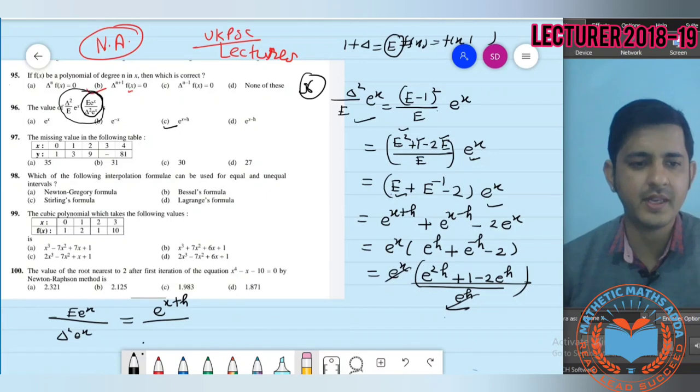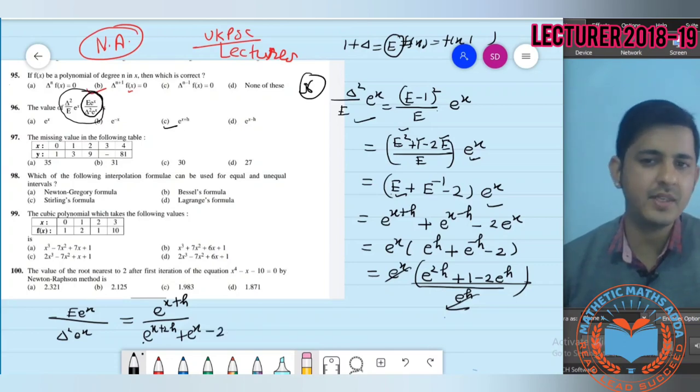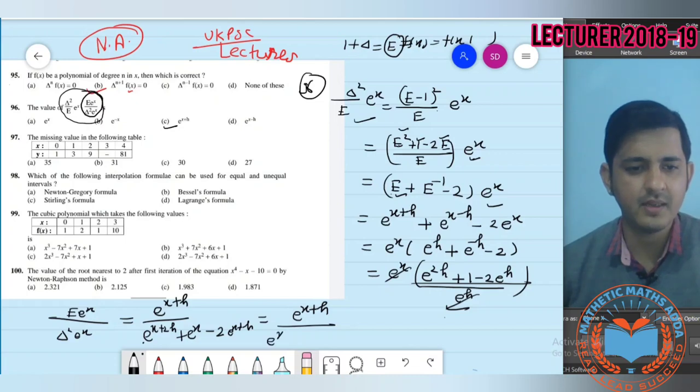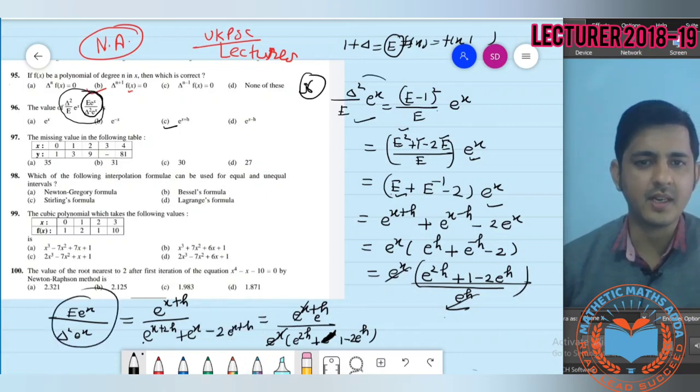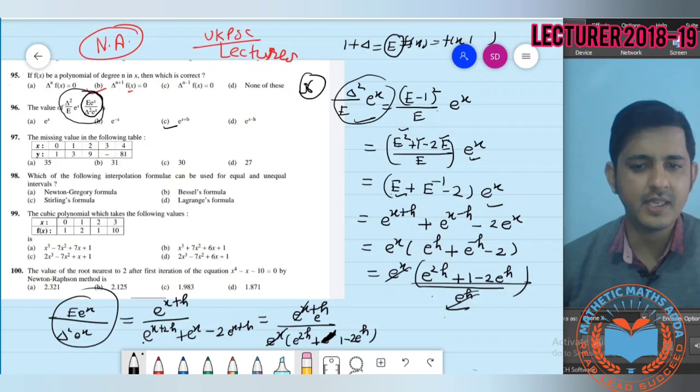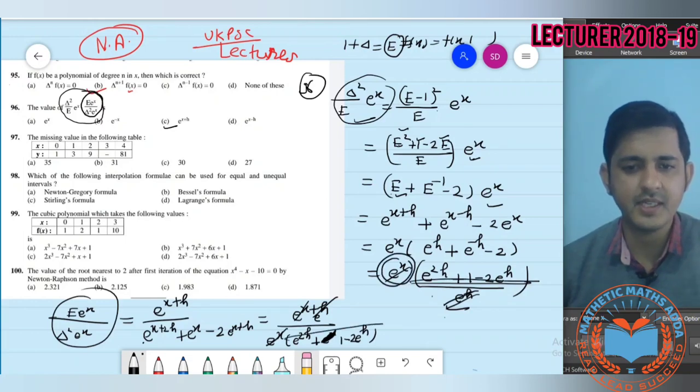E squared into e to the power x will become e to the power (x+2h). E into e to the power x becomes e to the power (x+h), and minus 2E into e to the power x becomes e to the power (x+h). This equals e to the power x times (e to the power 2h plus 1 minus 2e to the power h) upon e to the power x. These terms cancel and we get e to the power x.